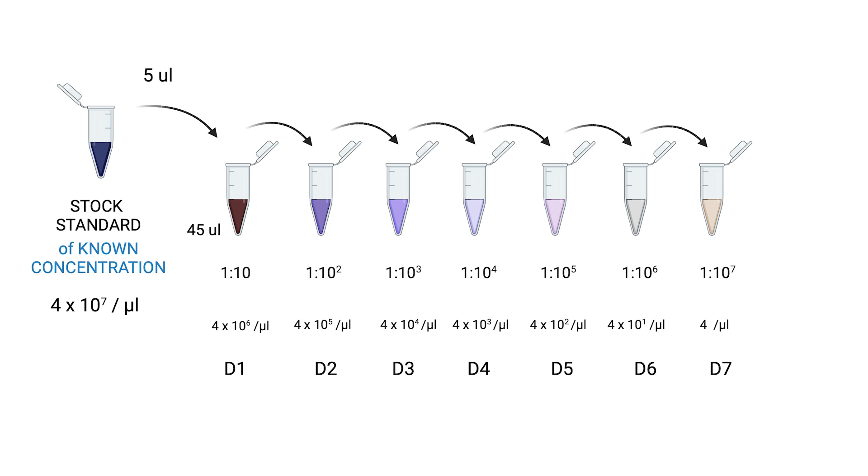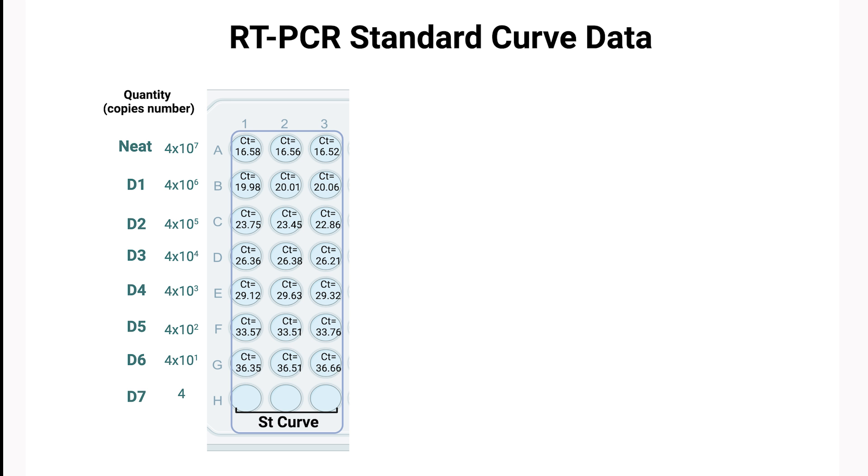When preparing the dilution series for our known standard, it's crucial to mix each dilution thoroughly. Be sure to change pipette tips meticulously after each step to maintain accuracy and precision. Once the standard sample's dilution series is prepared, they are run in triplicate in a qPCR reaction alongside our unknown samples.